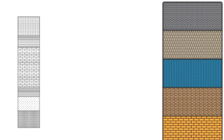By correlating strata, scientists can reconstruct the geological history of an area, understand past environmental changes, and infer the timing of events such as the deposition of sedimentary layers, volcanic eruptions, or the emergence of fossils. This process involves various methods and techniques depending on the nature of the rocks and the objectives of the study.